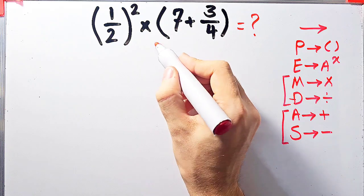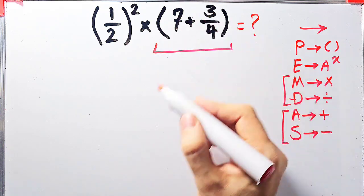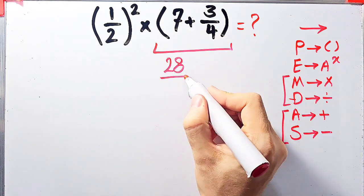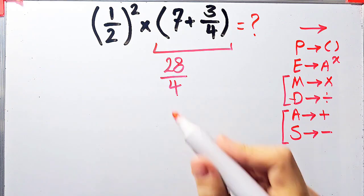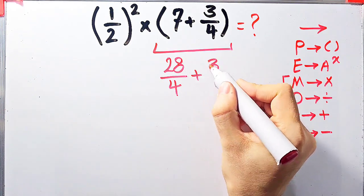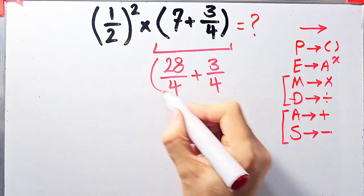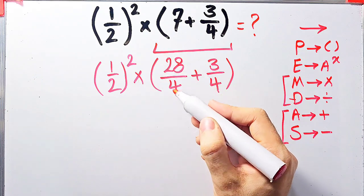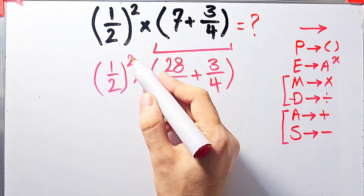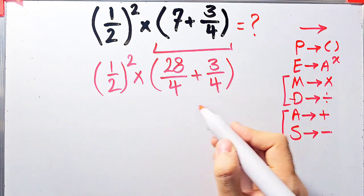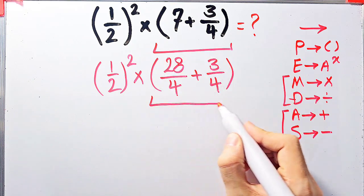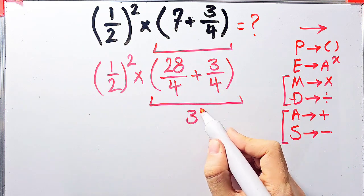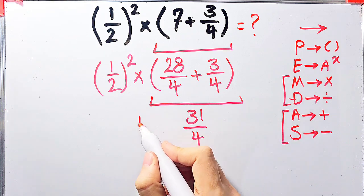First we simplify the parenthesis. We have seven plus three over four. Since the denominator is four, we can write seven as twenty-eight over four. Now we have twenty-eight over four plus three over four, which equals thirty-one over four. Now inside the parenthesis we have thirty-one over four.